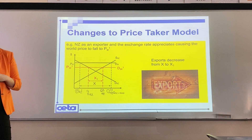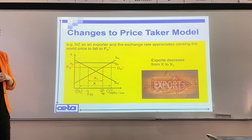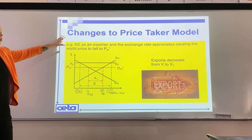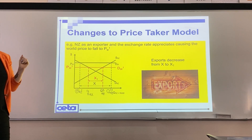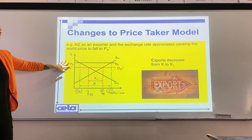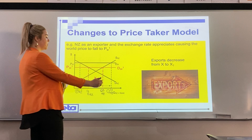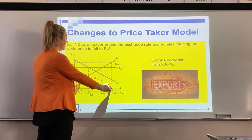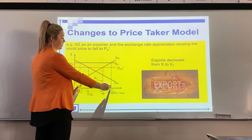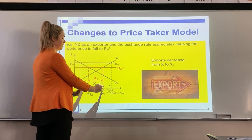This graph shows that if we are an exporter and the exchange rate appreciates, the value has gone up for every one New Zealand dollar, so the world price would fall. We start with our original exporting quantity, make the change, and conclude that our exporting quantity has decreased from X to X1.